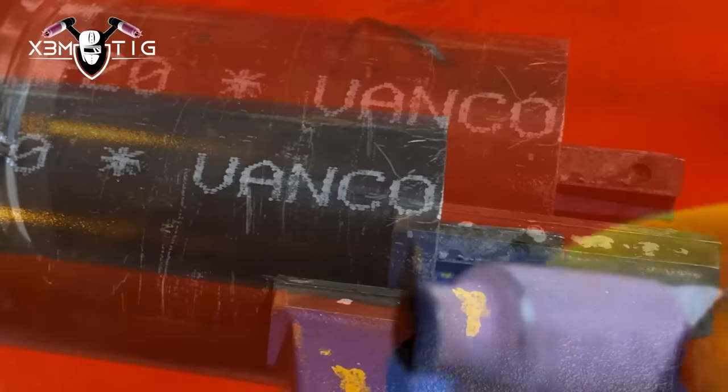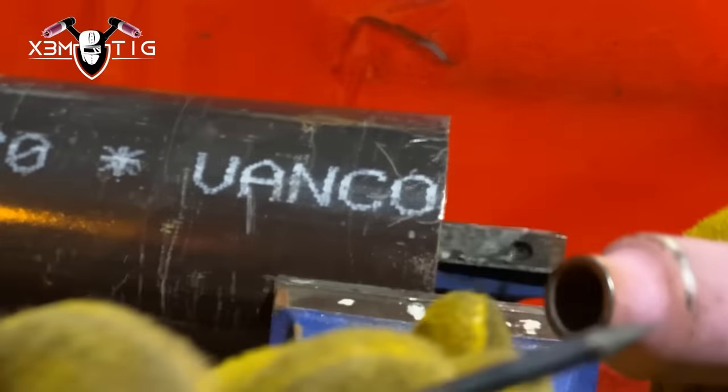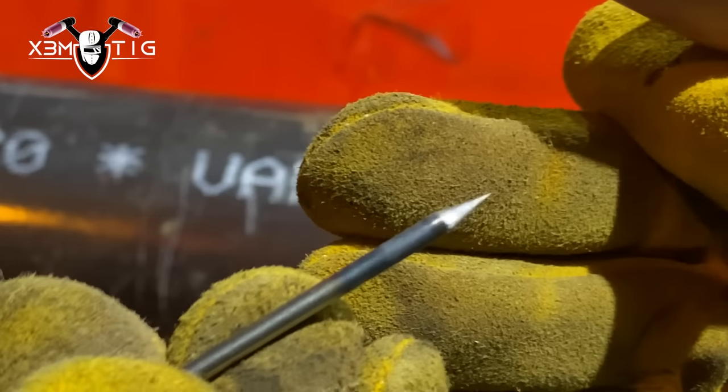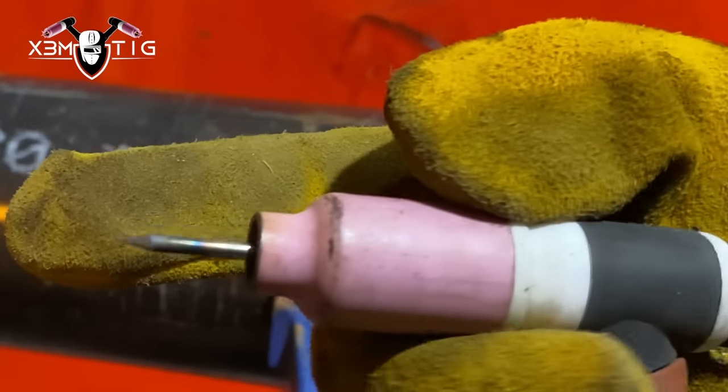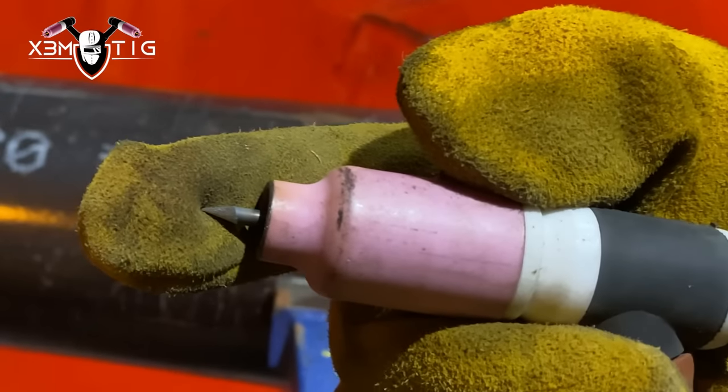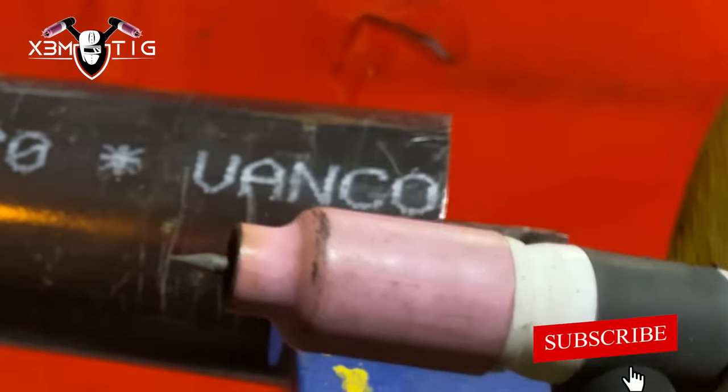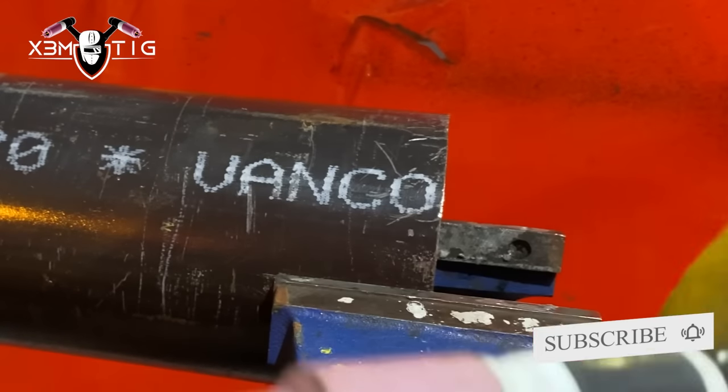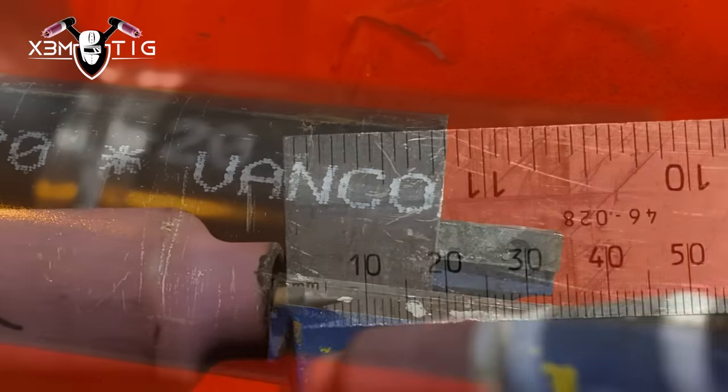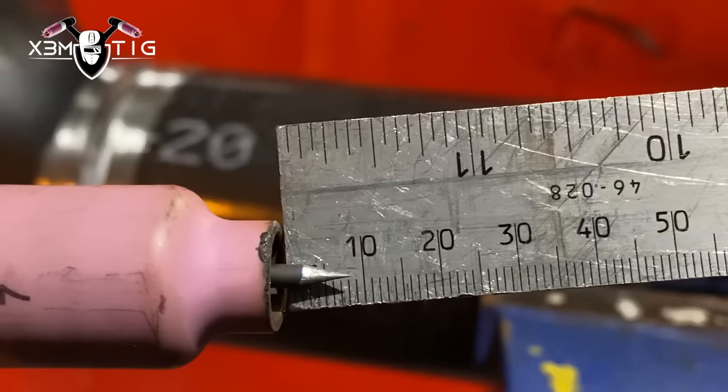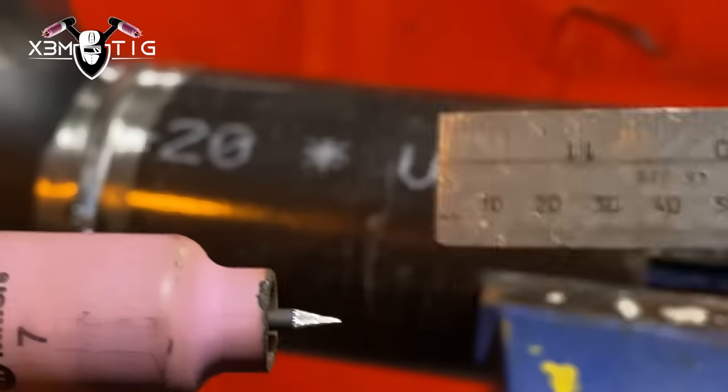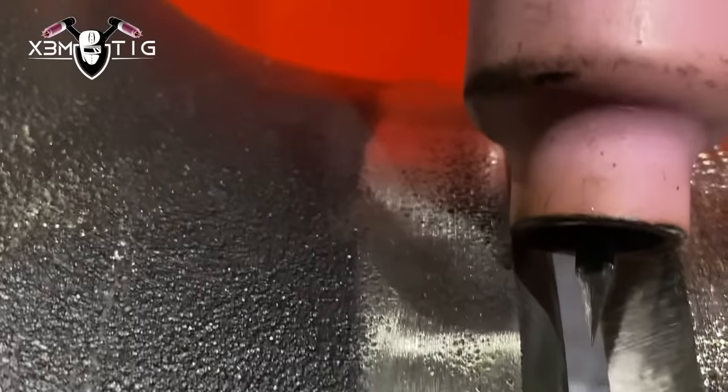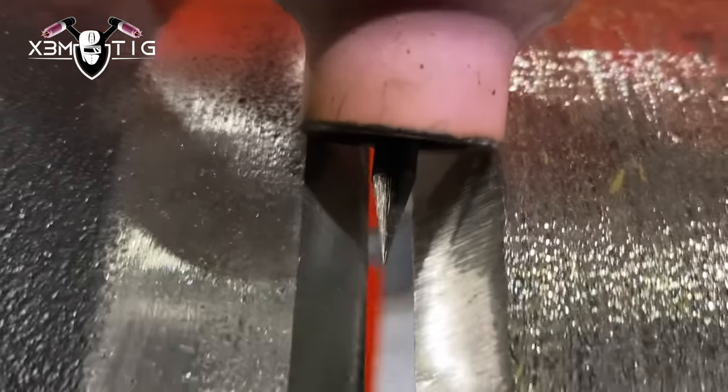Cup size 7 and tungsten, it's gonna be 1/8 two percent lanthanated, sharp edge, sharp pointed edge. This is what I like to do for my tungsten. And the stick out is up to 10 mil. This is what I usually like to do, up to 10 mil. That's what usually it is, it's always close to 10 mil. As you can see here, nine, nine, ten mil. That's what works for me.